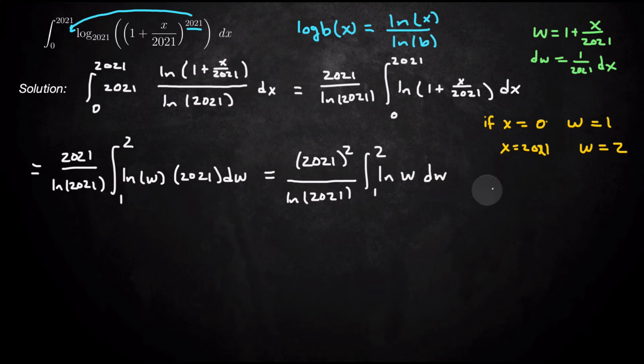Now the trick is, how do you remember to integrate natural log of w? So either you've just memorized the antiderivative at this point, or you just use integration by parts. So I typically use integration by parts, where u equals natural log of w, and dv equals dw. And du is 1 over w dw, and v equals w.